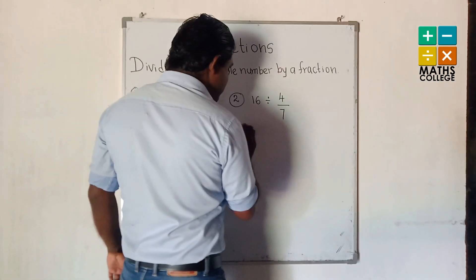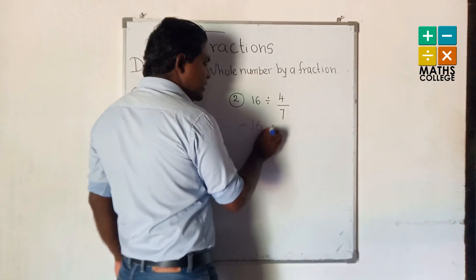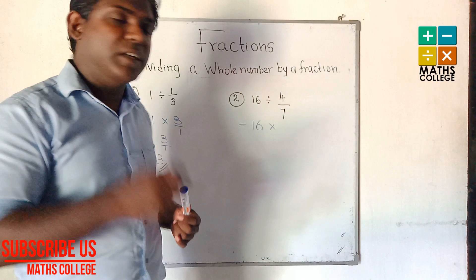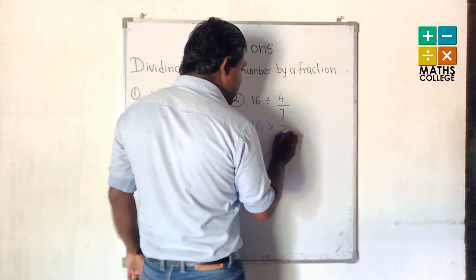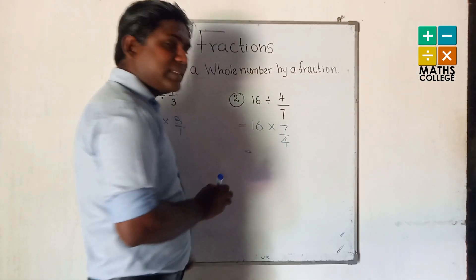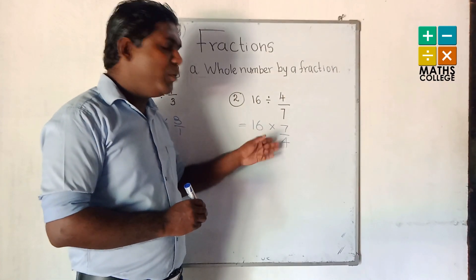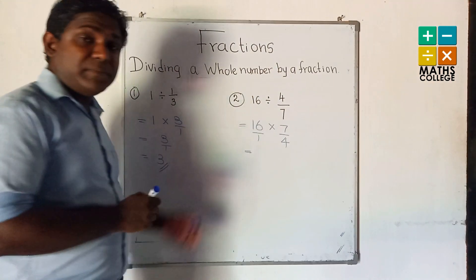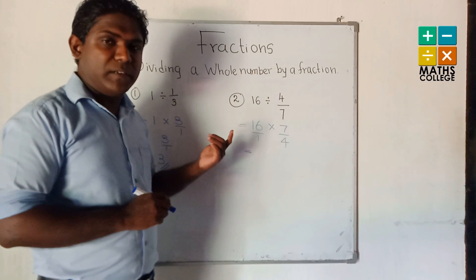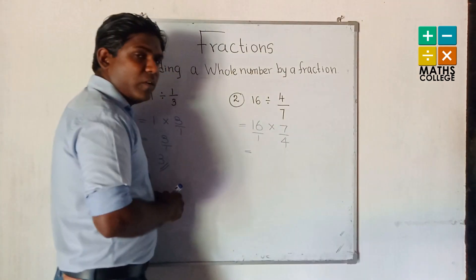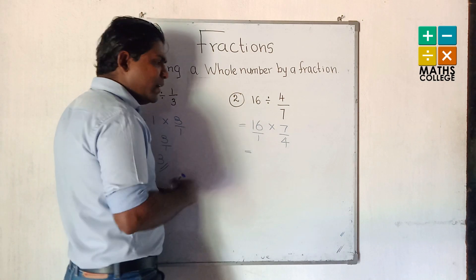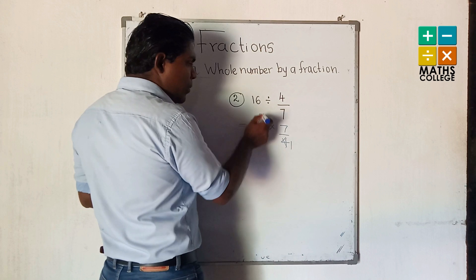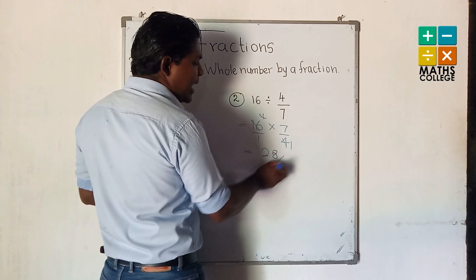Second one: 16 not change. Division, change to multiply. This fraction 4/7 — change as reciprocal: 7 upon 4. We write 16 as 16 upon 1. Now consider 16 and 4: the common factor is 4. Divide by 4: 16 divided by 4 is 4, and 4 divided by 4 is 1. So 4 multiplied by 7 is 28. That is the answer.